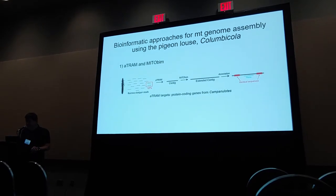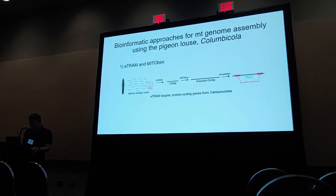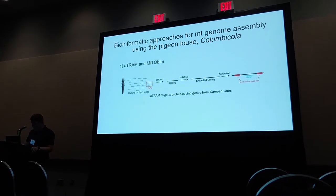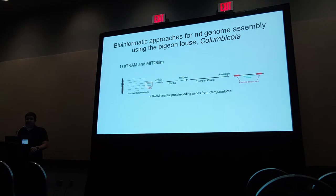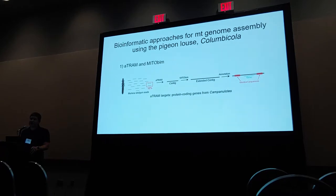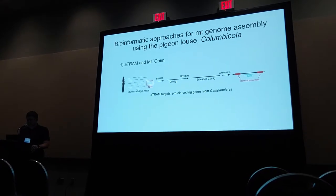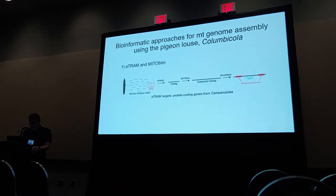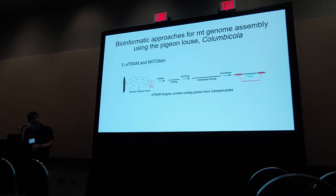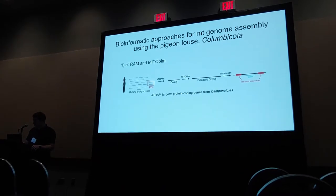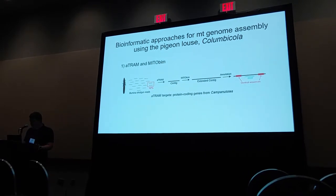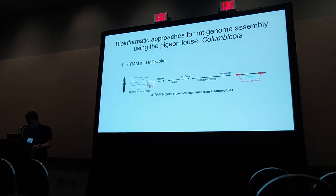We used a couple of different approaches to get the mitochondrial genome from next-gen data. We used a subset of Illumina shotgun reads and then the assembler ATRAM, which is a targeted de novo assembler, to find contigs, and then used MitoFinder — an often-used program for assembling mitochondrial genomes — to extend those contigs. We annotated the extended contigs to identify genes, and were also able to identify extended stretches of identical DNA on the ends of these contigs, which might suggest a circular architecture.